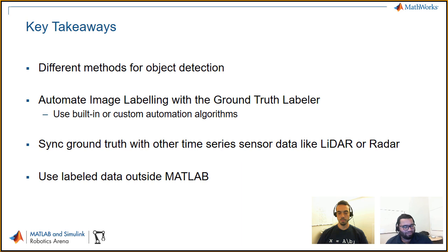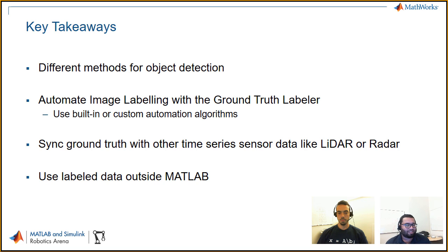Key takeaways: we covered the different methods of object detection — classical computer vision, machine learning, and deep learning — and showed how to automate image labeling using the ground truth labeler app. There are also image labeler and video labeler apps within the computer vision systems toolbox. The ground truth labeler app can also sync with other time series data like LIDAR or radar via the driving connector API. Most importantly, the label data can be used outside of MATLAB in other environments.